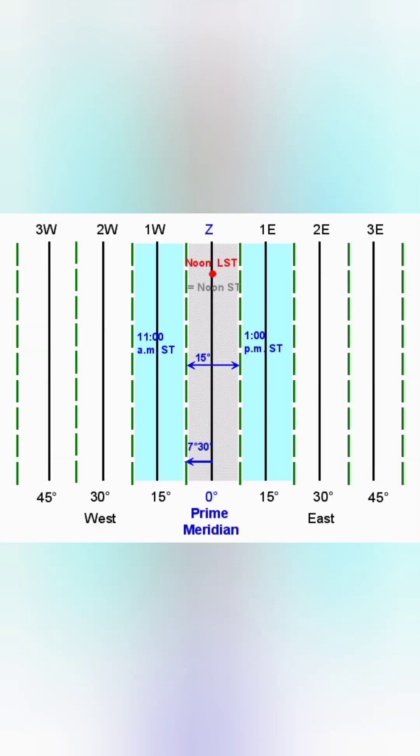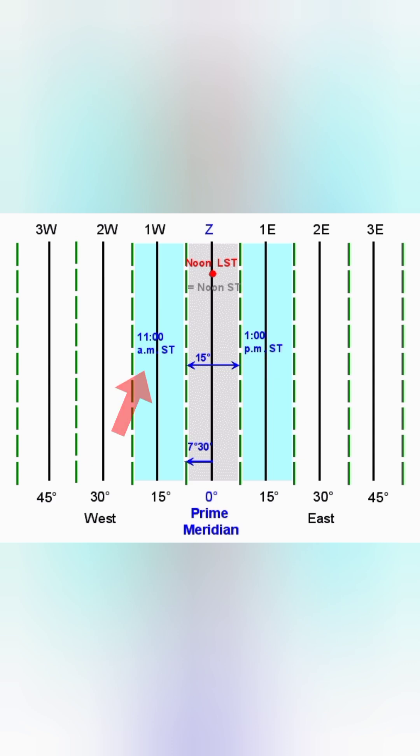For example, if it is 12 noon at 0 degrees prime meridian, then it will be 1 pm at 15 degrees east and 11 am at 15 degrees west.